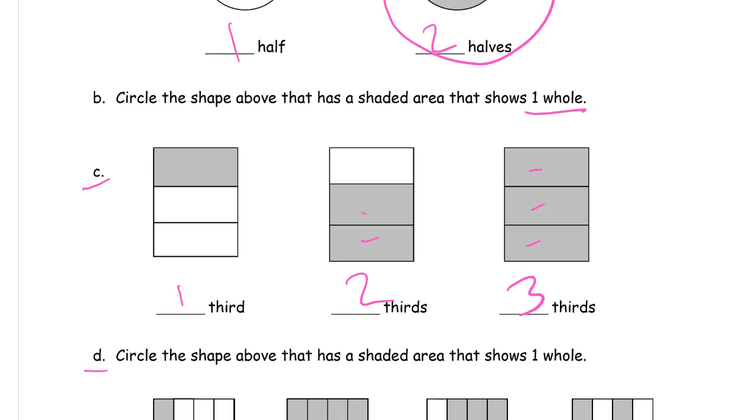And then it says for D, here, circle the shape above that has a shaded area that shows one whole. Well, the three thirds has the whole thing shaded in.